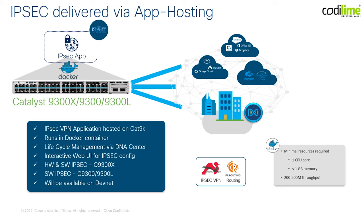Starting from 17.10, we are now supporting IPsec capability on our Catalyst 9300 platform using a VPN-hosted application called Codilime, which also provides an interactive web UI for configuration and management purposes. This is also supported on the Catalyst 9300X in addition to its own native IPsec support. Minimal resources are required, including one CPU core and less than one gigabit of memory, with an expected 200 to 500 Mbps throughput of app performance.